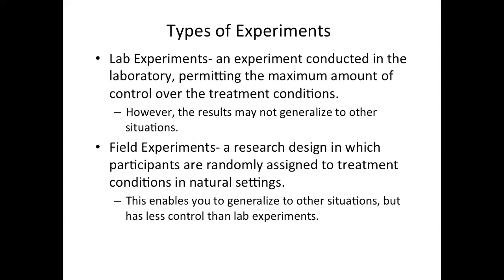There are different types of experiments, similar to naturalistic versus systematic observation — one happening in the real world and one in a lab. We have the concept of a lab experiment and a field experiment. A lab experiment controls for all outside factors; if it happens in the lab, you have greater control over confounds. But the question is whether the conditions were so artificial that they don't generalize to the real world.